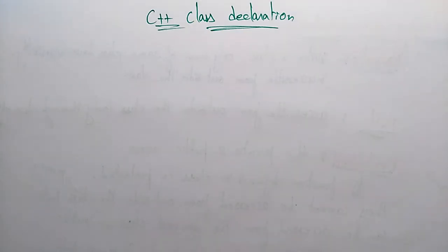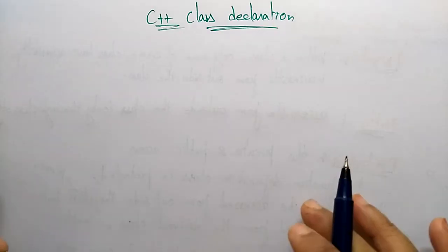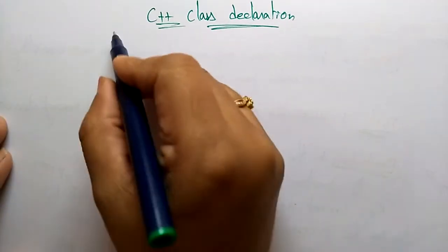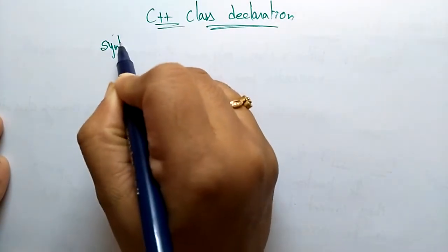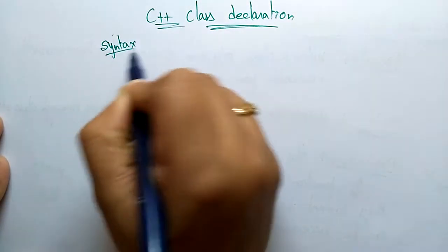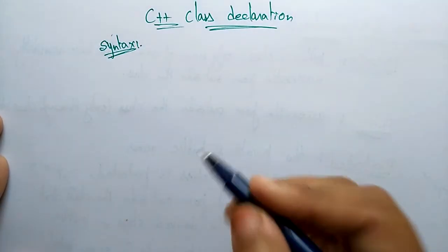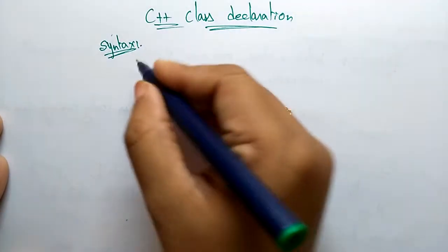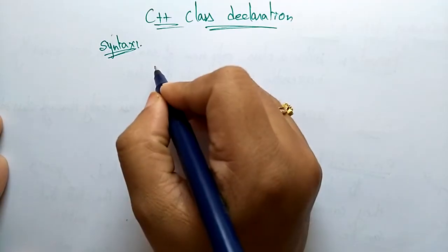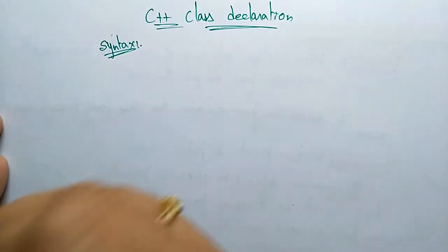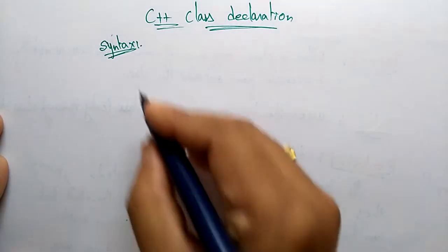Hi students, welcome back. In the previous video, I explained the syntax of the class. So let us see again the syntax of the class. In the syntax of the class, I explained about the data members and the access specifiers. In this video, we will see how the member functions will be present in the class.